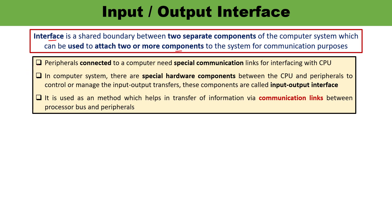You know the term peripherals — the external devices, the components which can be connected with the computer system. When the peripherals are connected with the computers, there is a requirement of a communication link. Because of those communication links, the CPU can interact with the peripherals. So interface — you can understand these are some kind of hardware components which are kept in between the CPU and peripherals, and they manage and control the transfer. These are known as the input-output interface.